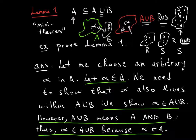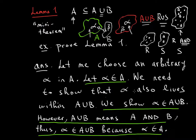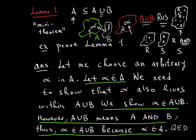Alpha is an element of A union B because alpha was an element of A, and that's exactly what we needed to show. You have to be very precise about what you want to show, and once you show it, you conclude your theorem and put QED at the end.